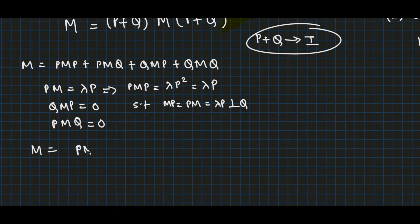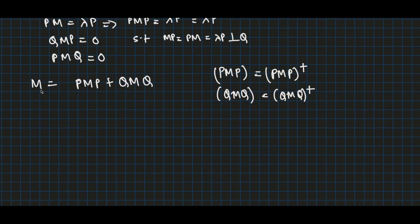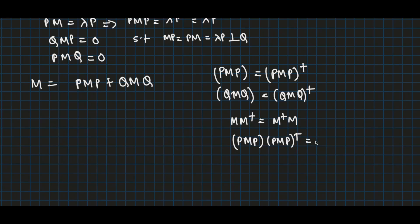Since P and Q are projectors, they are Hermitian, so PMP equals (PMP)-dagger and QMQ equals (QMQ)-dagger. Since M is normal, meaning M M-dagger equals M-dagger M, and P and Q are projection operators, it follows that PMP and QMQ satisfy (PMP)(PMP)-dagger equals (PMP)-dagger(PMP), and similarly for QMQ. Therefore PMP and QMQ are also normal operators.